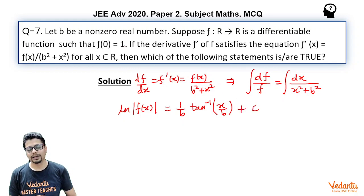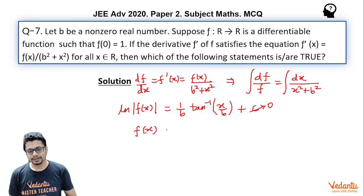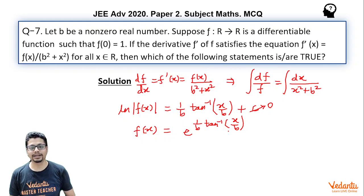Since f(0) = 1, substituting x = 0 gives ln(1) = 0 and arctan(0) = 0, so the arbitrary constant C = 0. Therefore f(x) = e^((1/b) · arctan(x/b)). You might ask why we drop the absolute value — because f(0) = 1 (not −1), so f(x) equals the positive exponential, not the negative one.